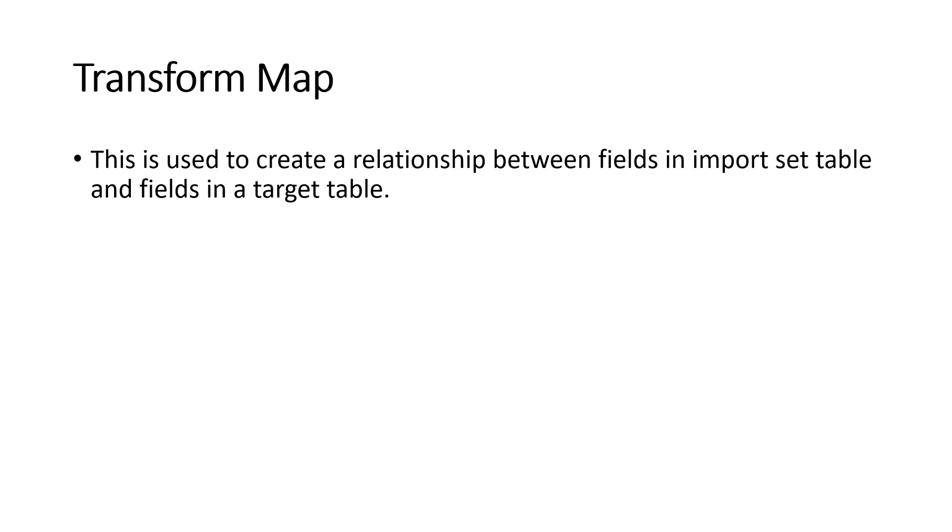The most important concept inside of import sets is the transform map. Once your data is in the staging table, you have to map those fields to the target table. For example, if your Excel has 'user ID' and the user table also has 'user ID,' you map them so records can be successfully transformed to the proper field. The transform map creates the relationship between import set table fields and target table fields.